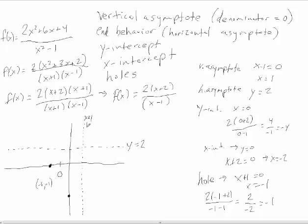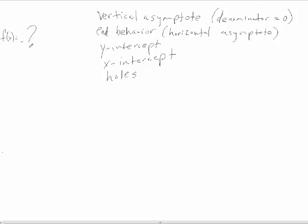Now we have all the components — asymptotes, x and y-intercepts, and the hole — and we can draw the graph of f(x) = (2x² + 6x + 4) / (x² − 1). Now we've turned functions into graphs. Next, we're going to take a graph and find a function.